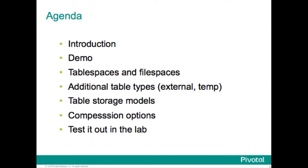As an example, in the demo we'll illustrate storing a one-and-a-half-million row table but only occupying as much space as an 832-row table would take. The more you work with data, the more obsessive you become over how it's stored, because making the right choices yields immense benefits in terms of speed and storage economics. We'll start with that demo, then talk about table spaces and file spaces, additional table types such as external and temp tables, table storage models, compression options, and then I'll urge you to test all this in the lab.